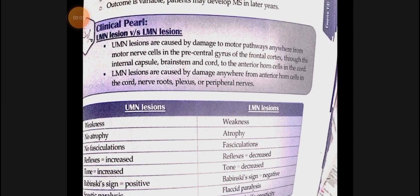Assalamu alaikum. Today's topic is about upper motor neuron lesions and lower motor neuron lesions. It's important for viva questions and for understanding diseases. Upper motor neuron lesion is caused by damage to motor pathways anywhere from the motor nerve cells in the pre-central gyrus of the frontal cortex, through the internal capsule, brainstem, and cord to the anterior horn cells in the cord.